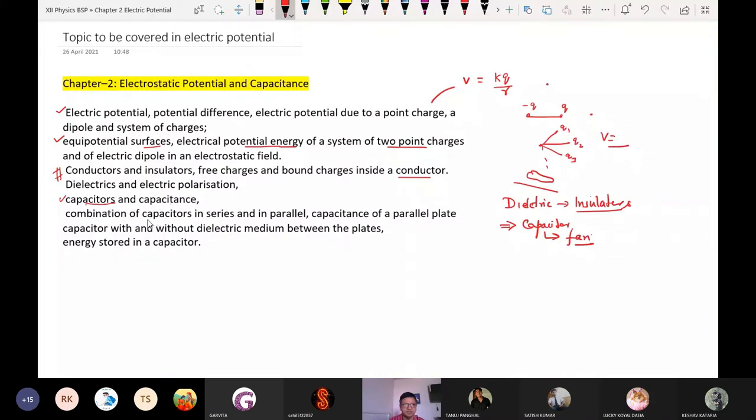Then the combination of these capacitors in series and in parallel. So how they affect the results? Then capacitance of a parallel plate capacitor. Particular plates we have taken, by using this we find out the capacitance of this combination, this parallel plate capacitor. So what is the capacitance in this case?